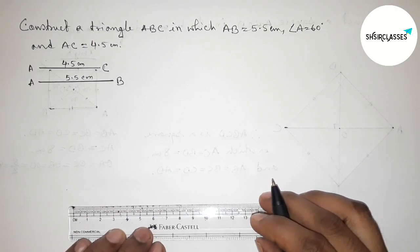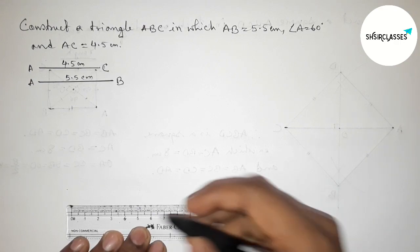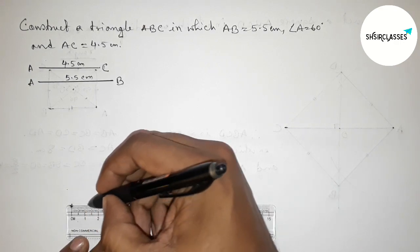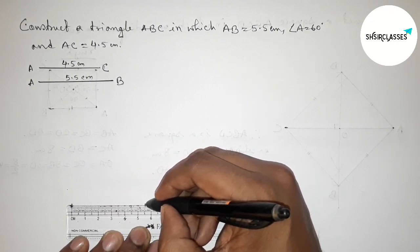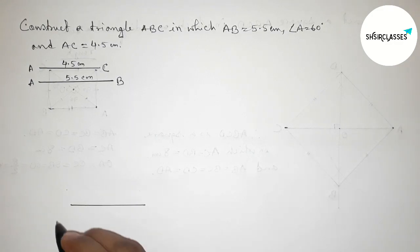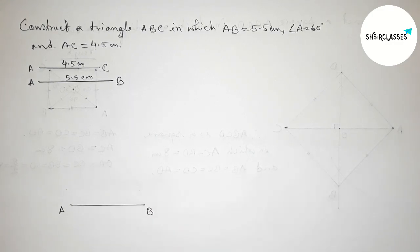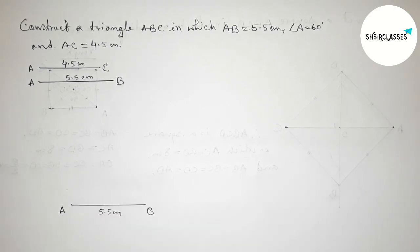Now we draw line AB equals 5.5 centimeters. Starting from zero to 5.5 centimeters. Taking point A at the start and point B at 5.5 centimeters, so AB equals 5.5 centimeters.